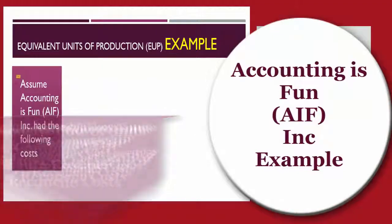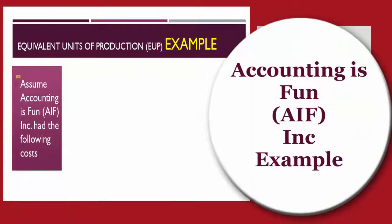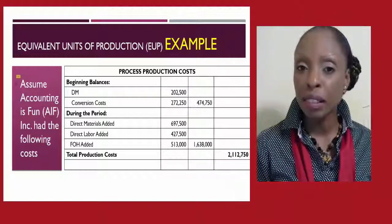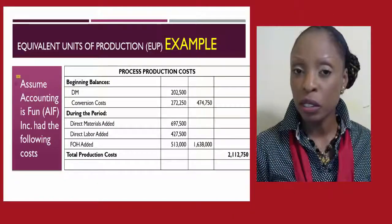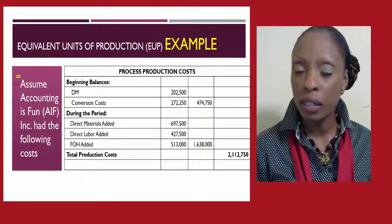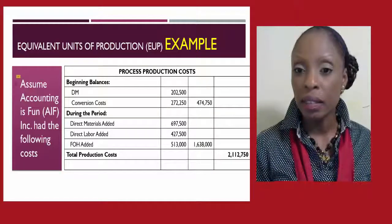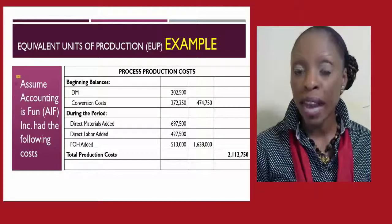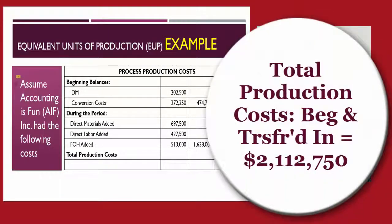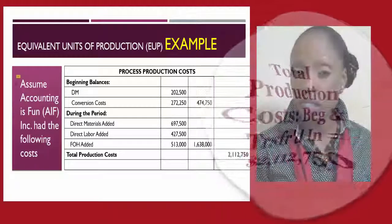Let's look at an example. Assume that Accounting is Fun, Inc. had the following data. There were beginning balances for direct materials and conversion costs, as well as costs added during the period. The total of these two categories was $2,112,750. Take a moment to jot down that number — we'll reference it shortly.